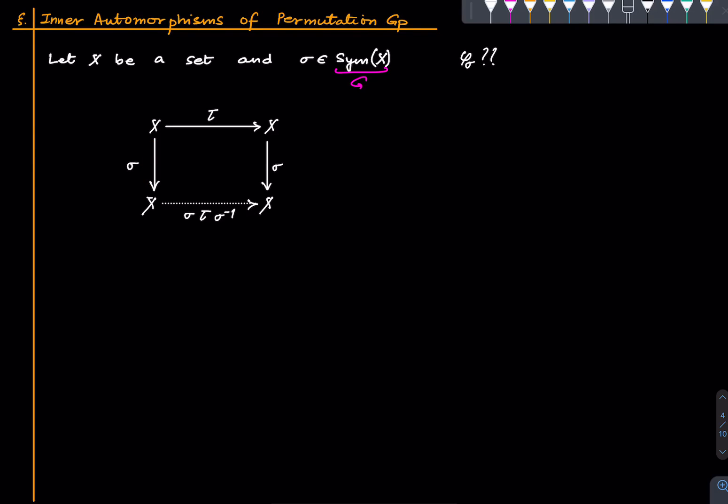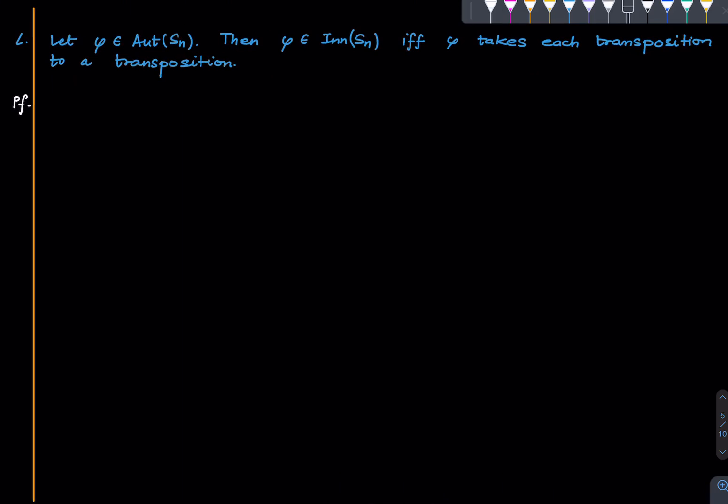The rest of the lecture is about characterizing the automorphism groups of permutation groups. Our agenda is to show that the automorphism group of Sₙ is actually the same as the inner automorphism group of Sₙ, except for n = 6.